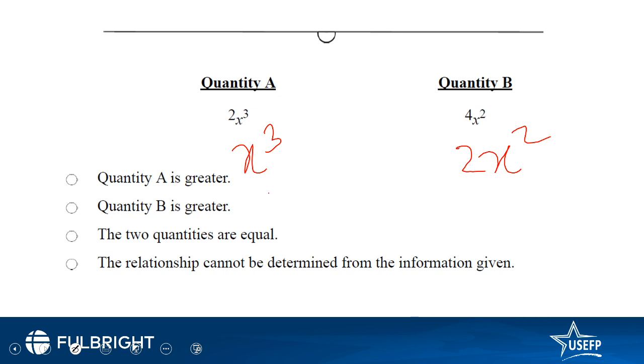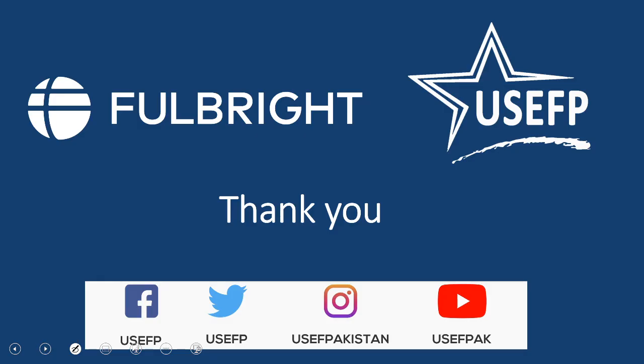If you substitute zero, both these things are equal. Whenever you substitute, don't stop there, you need to substitute at least three times to be sure this is correct. So we have proven it is not these two options. Next we substitute something else, so we substitute one. The first quantity becomes one, the other quantity becomes two, so option D is correct because we have one option in which they are equal and the other option in which they are different.